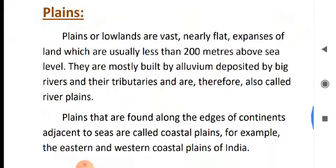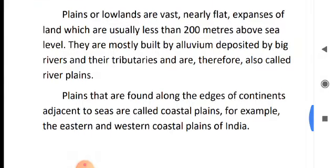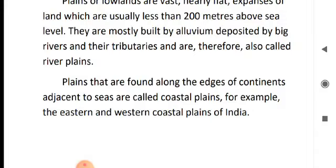Plain. A plain refers to a flat area which is usually less than 200 metres above sea level, formed by the deposited material of big rivers and their tributaries. River plains are very fertile regions and suitable for any kind of construction like roads, railways, and buildings. For example, the Ganga plain is a very fertile region. If a plain is found along the edge of continents adjacent to the seas, it is called a coastal plain — for example, the eastern and western coastal plains in India.